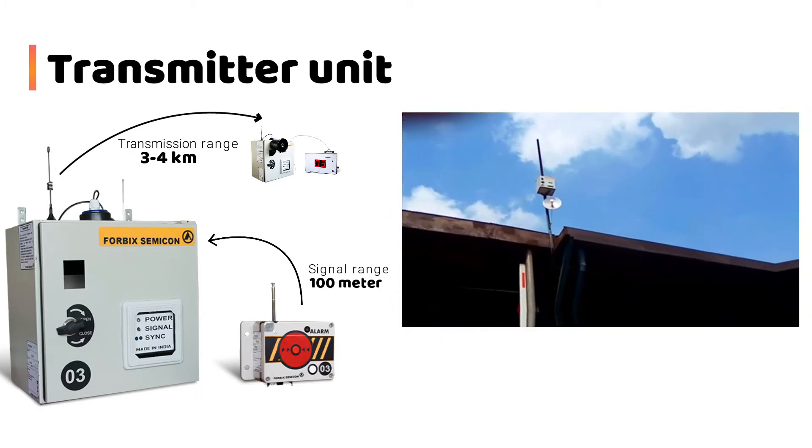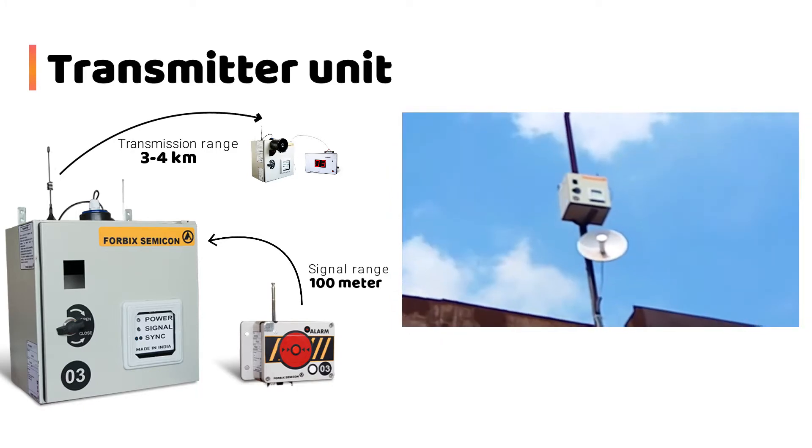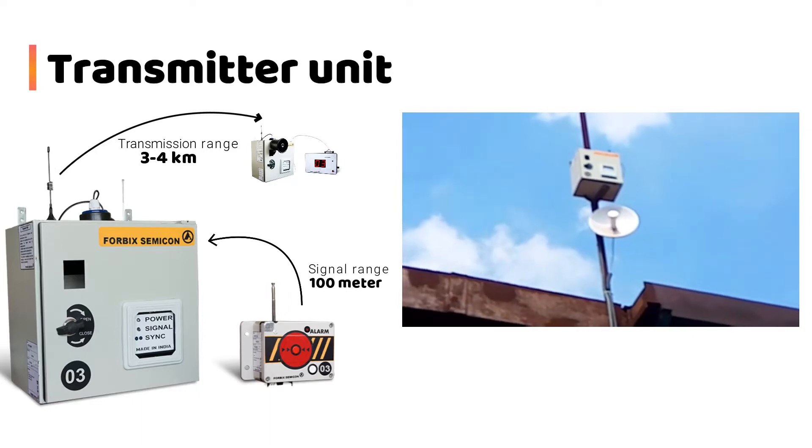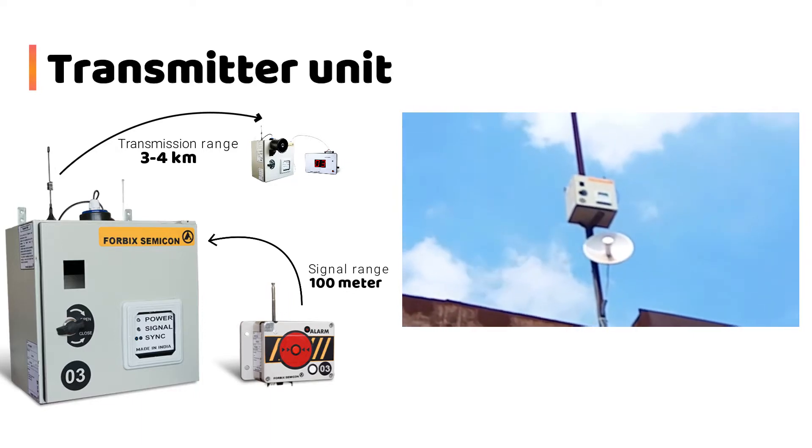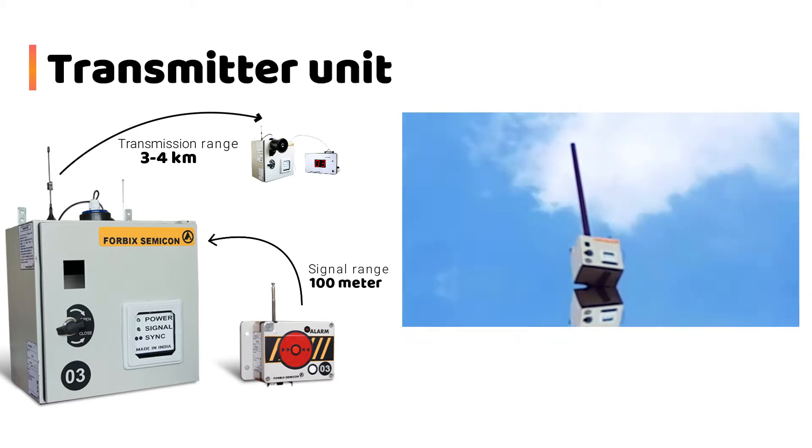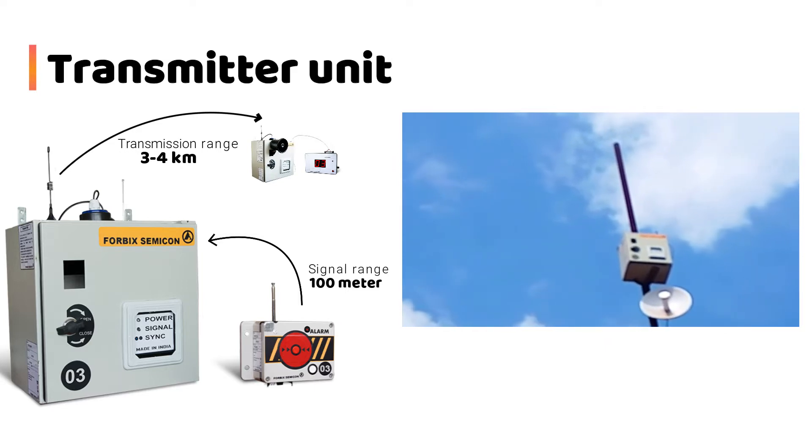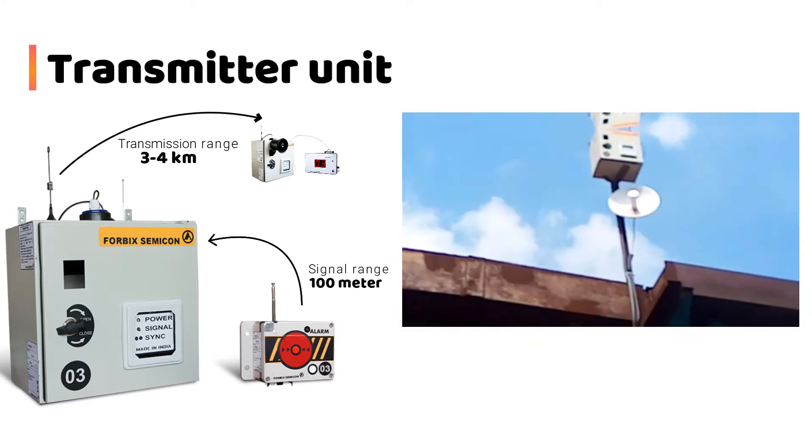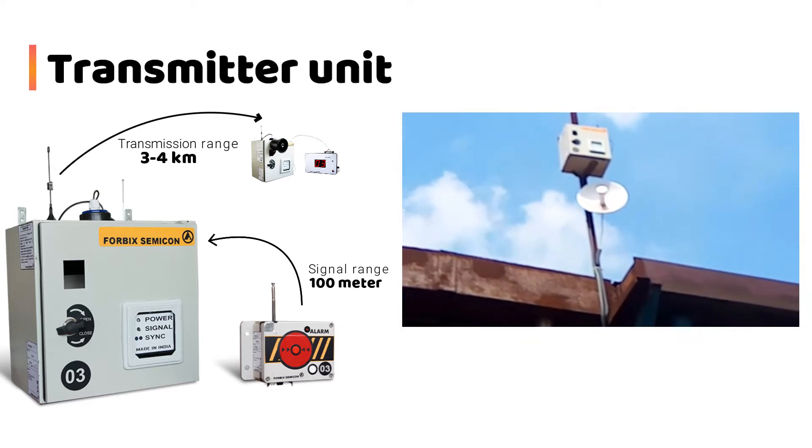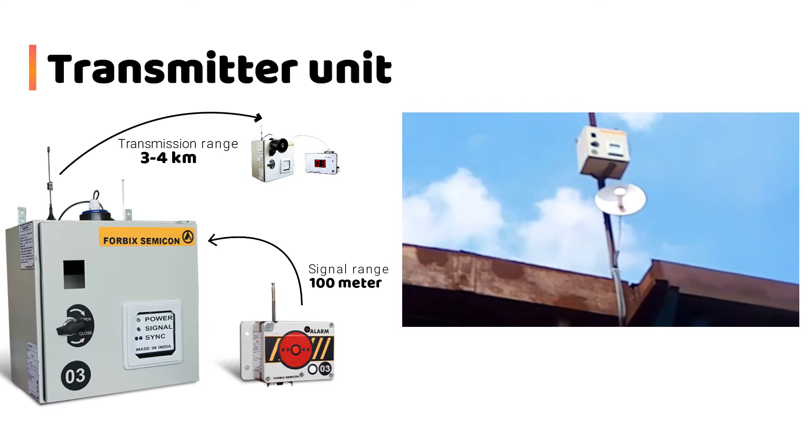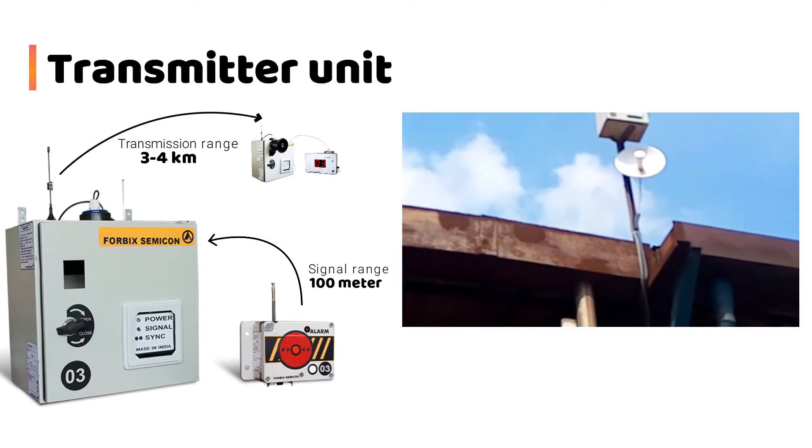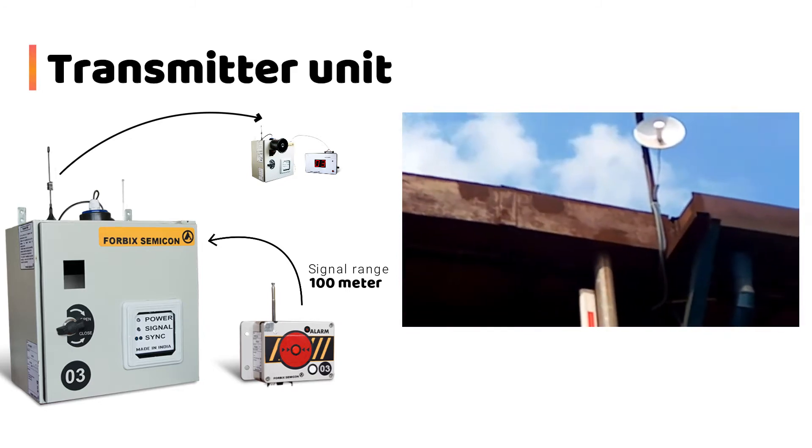As we can see, we have located a transmitter at the top of this building. The power signal is green, and the purple signal light is also glowing, thereby giving us the information that the transmitter is sending signal.